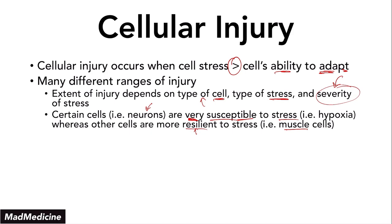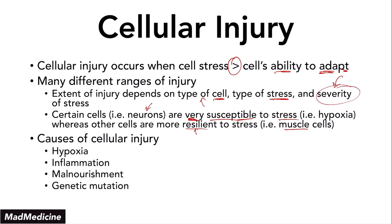The causes of cellular injury really range, and you should definitely know this — we have discussed these in detail in previous lectures so you should check them out. These causes include hypoxia, inflammation, malnourishment, genetic mutations, and of course the most intuitive cause, trauma. When it comes to hypoxia, this is probably one of the most important causes of cellular injury that you should know, because hypoxia is a common condition that occurs whether you're talking about a stroke, a MI — a myocardial infarction — it's a very common pathophysiology that occurs in a lot of disease states.